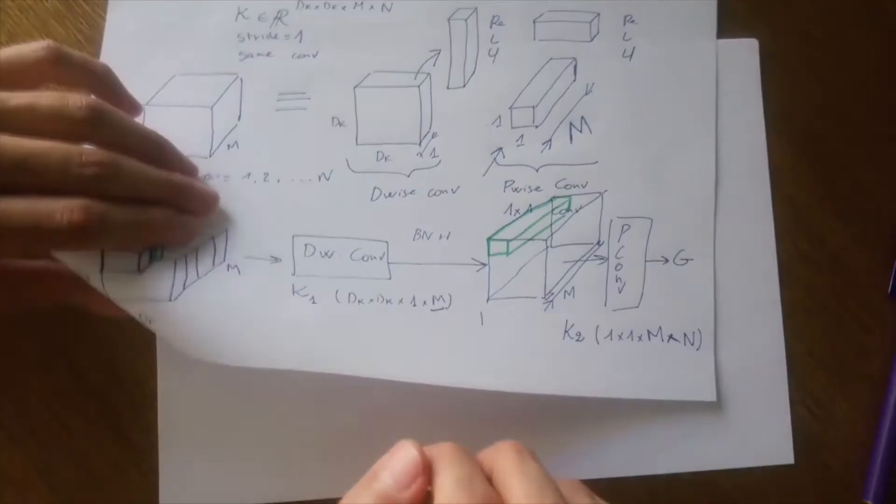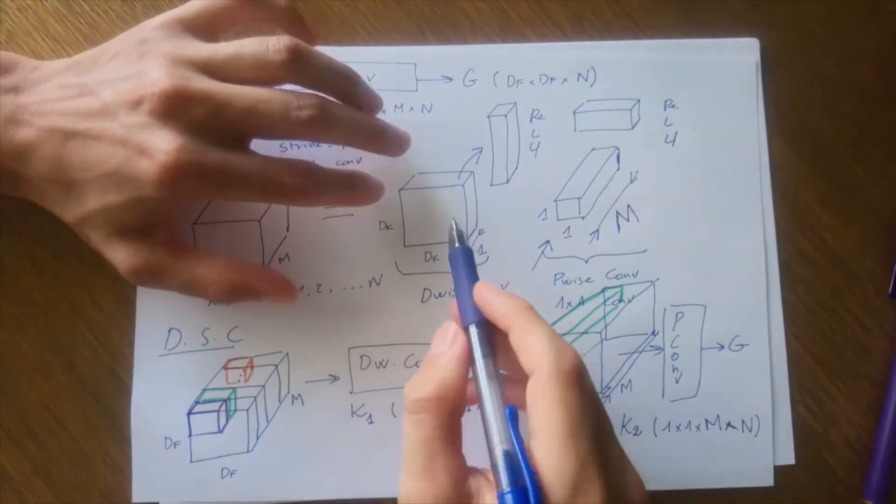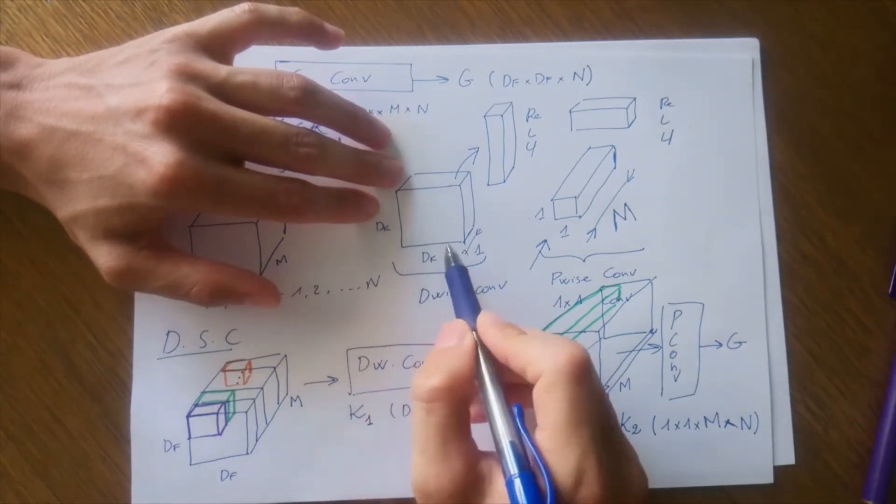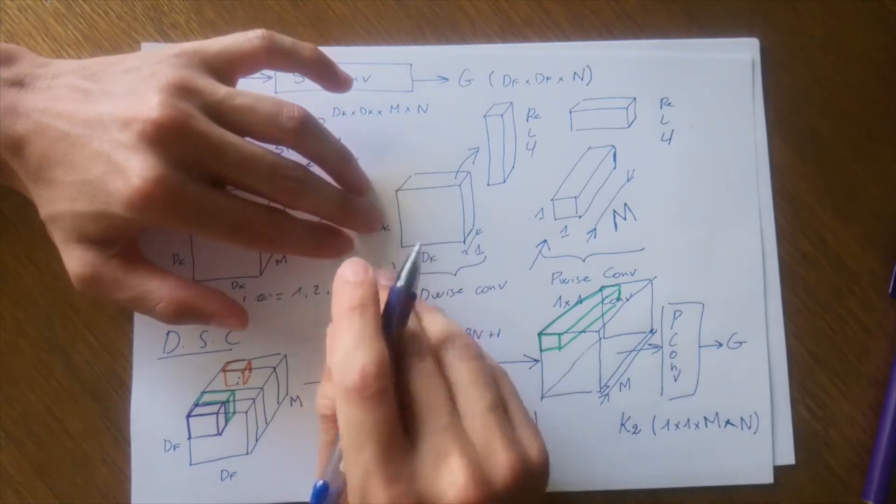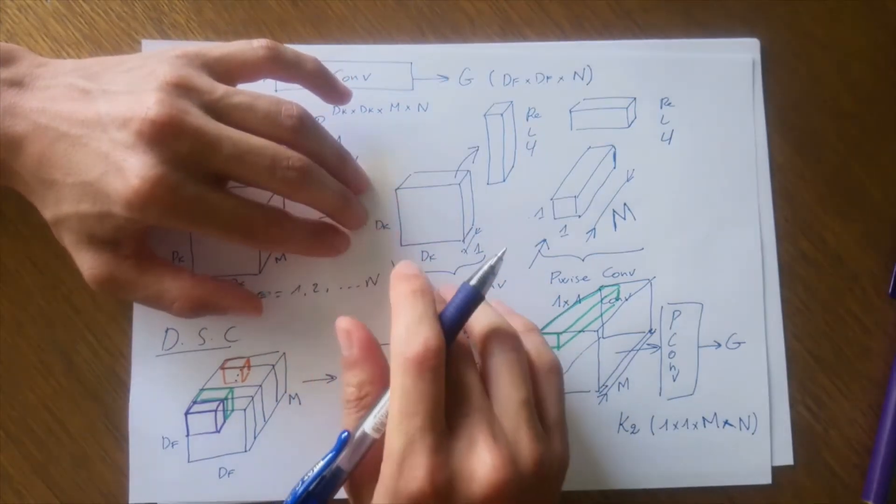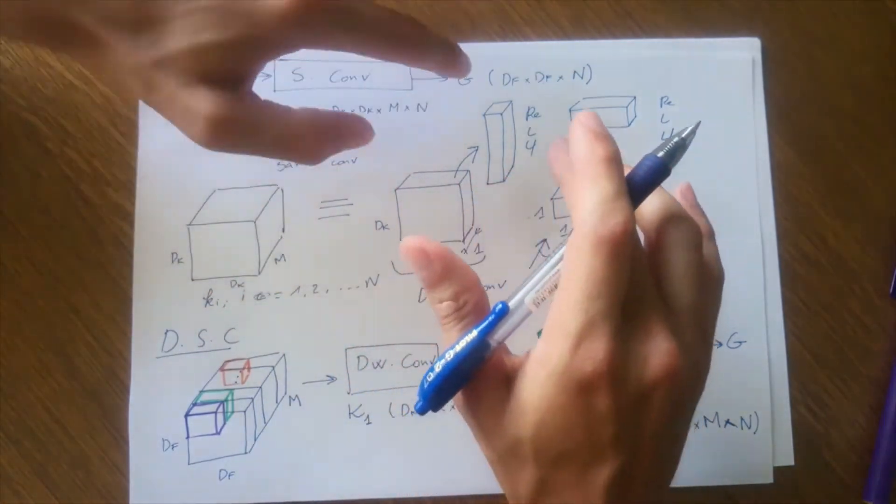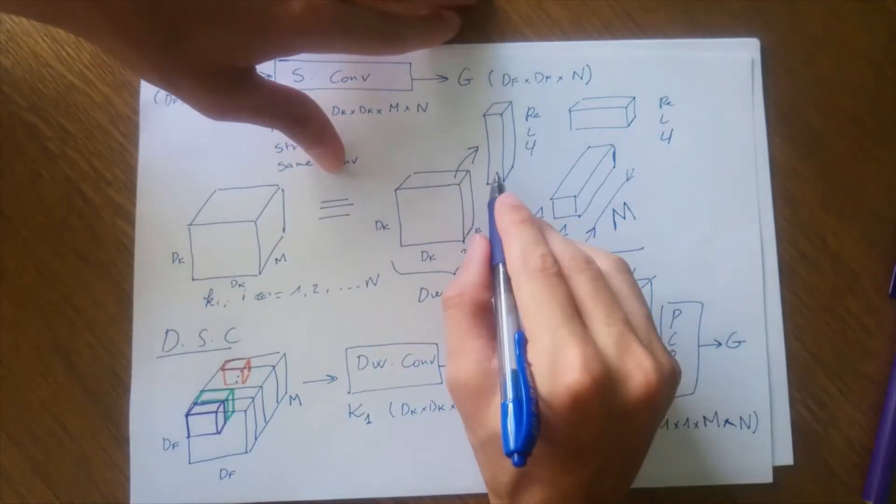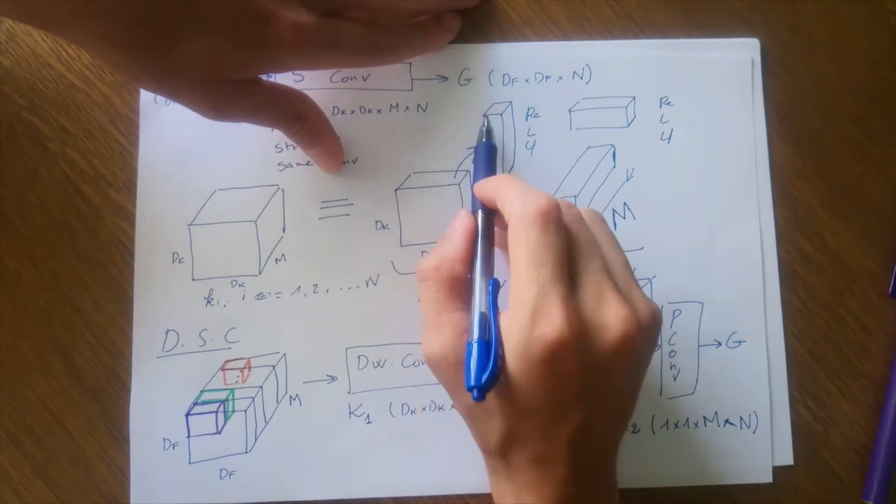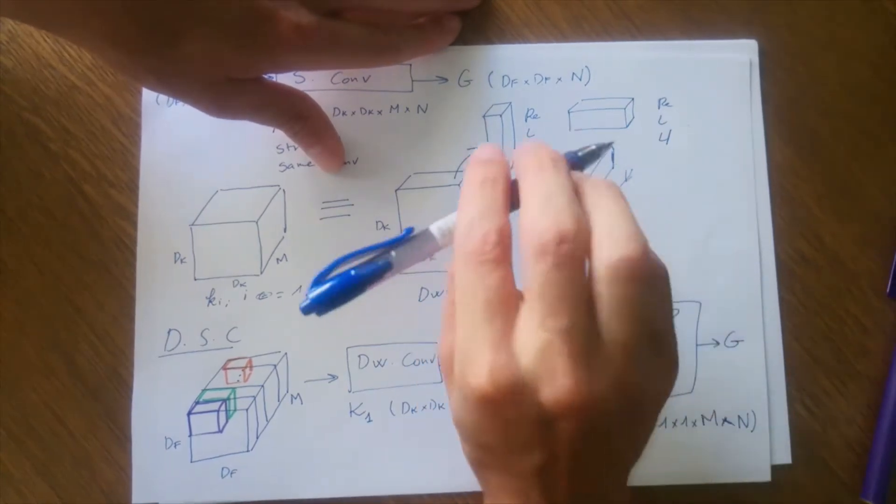So basically what I was talking about is why we do not factorize these spatial dimensions, or at least why authors of MobileNet V1 did not factorize these spatial dimensions into two smaller kernels. So the first kernel is a one-dimensional kernel which would filter the height dimension, and the other kernel would filter the width dimension.